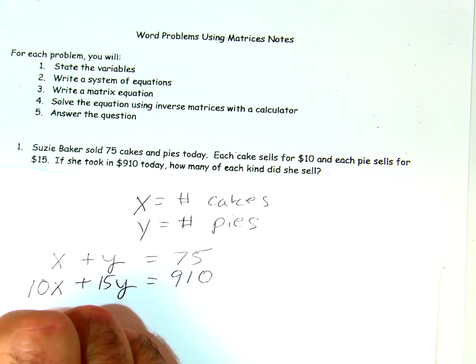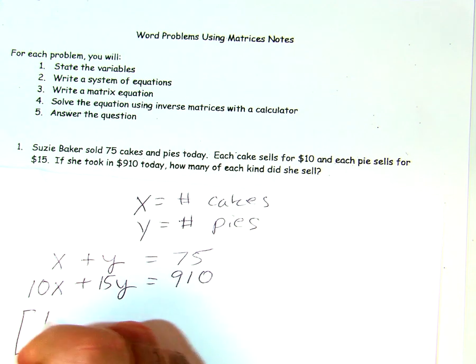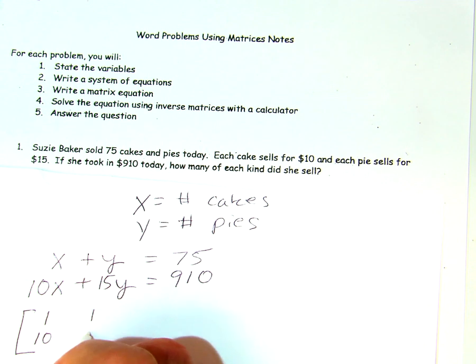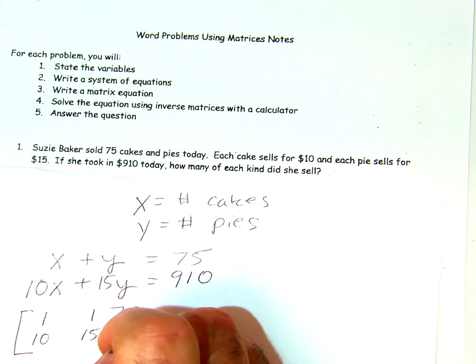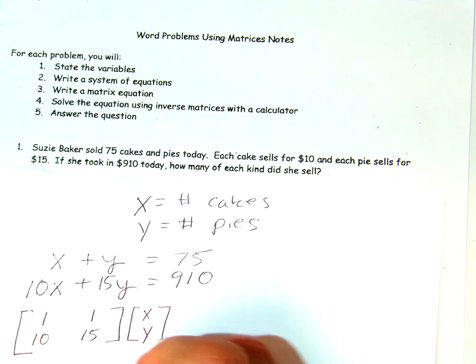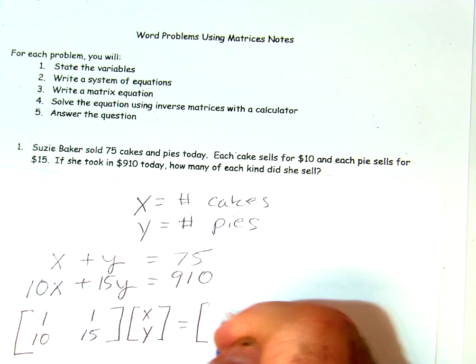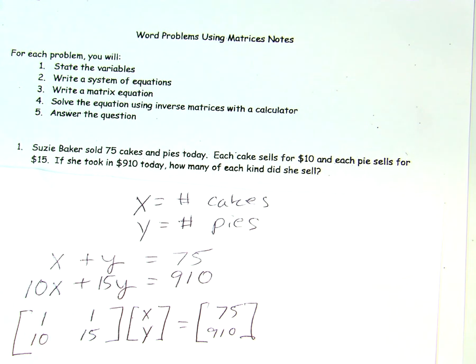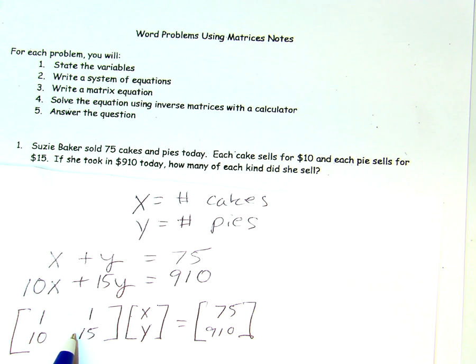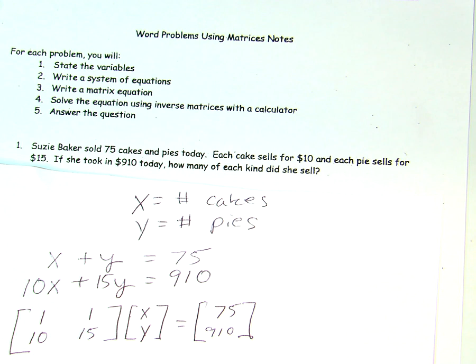We have the coefficient of 1 and 1, 10, 15, and this equals, well, we have the x and y, of course, and this equals the matrix 75 over 910. So now, all we have to do is find the inverse of this matrix, and then multiply it times the other side of the equation.